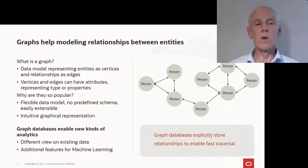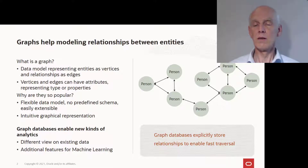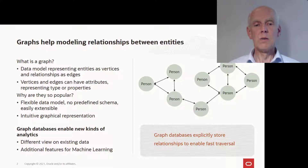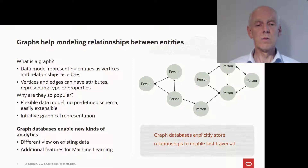In the social network example, this capability translates to finding indirect connections by performing shortest path or reachability analysis. In the following slides, I would like to highlight four specific capabilities of graph databases and how our customers are using them in their applications.